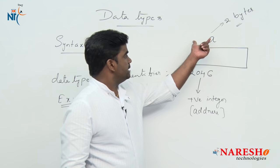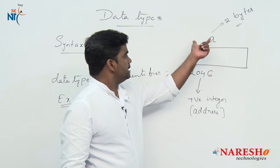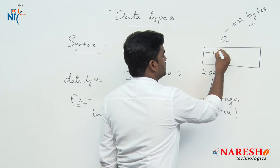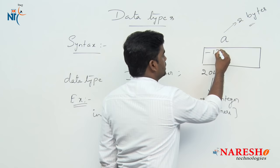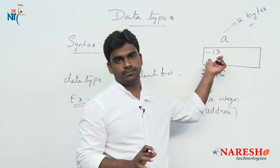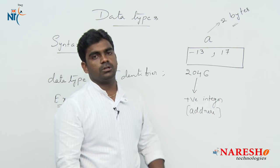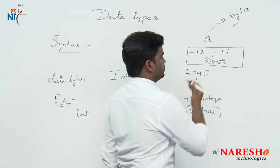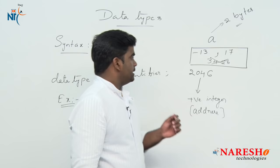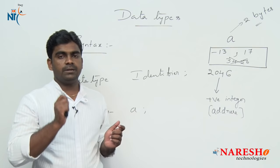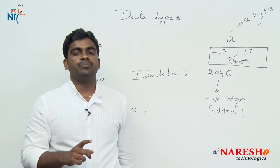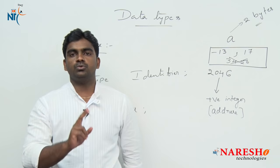Once the variable is ready, what type of data is allowed? For example, storing minus 13, a negative integer, is allowed. Storing 17, a positive integer, is also allowed. But can we store 4.56? No, decimal values are not allowed. So a data type represents two things: what type of data is allowed to store, and how much memory is required to store it.